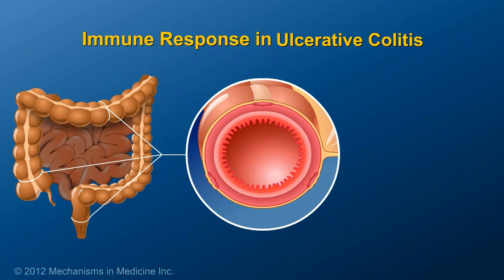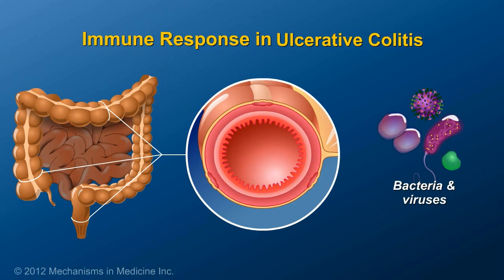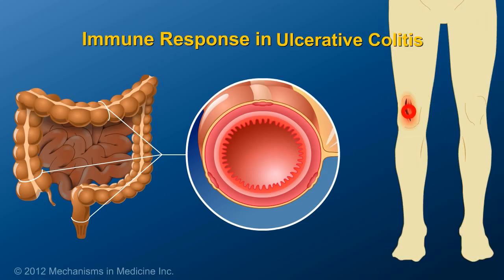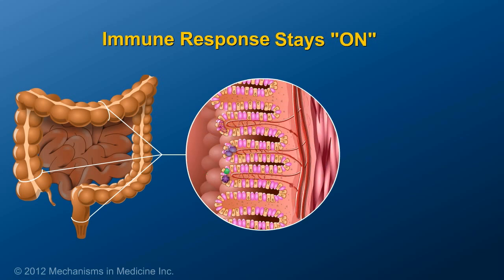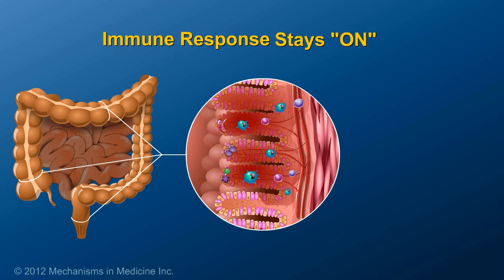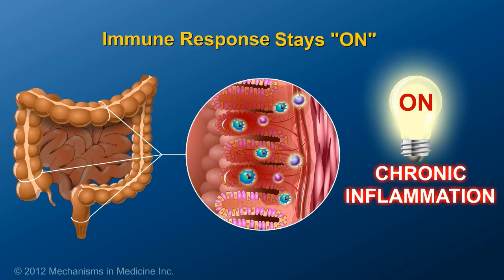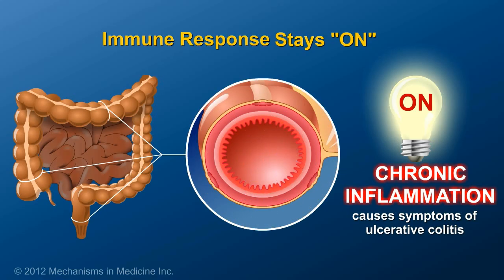In ulcerative colitis, inflammation appears within the colon, and the immune system works to combat the bacteria and viruses as it does with a cut on the surface of the skin. However, the difference is that the immune system is not able to turn itself off after it rids the body of the bacteria or viruses, so the ulcers remain until they are treated with medicine or surgery. This chronic inflammation is what causes the symptoms of ulcerative colitis.